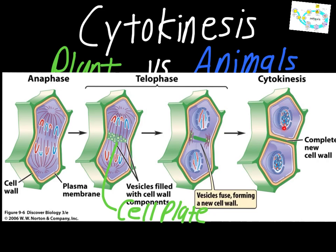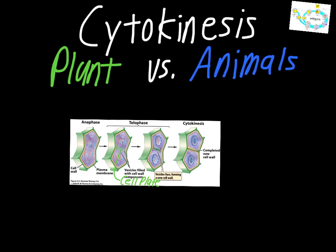To make it simple, all you really need to know about the difference between the two is the whole concept of the cell plate and that extra step that needs to be taken just because plants have the cell wall to develop, as well as the cell membrane that we see in animal cells. Thank you for watching, and I hope you learned something.